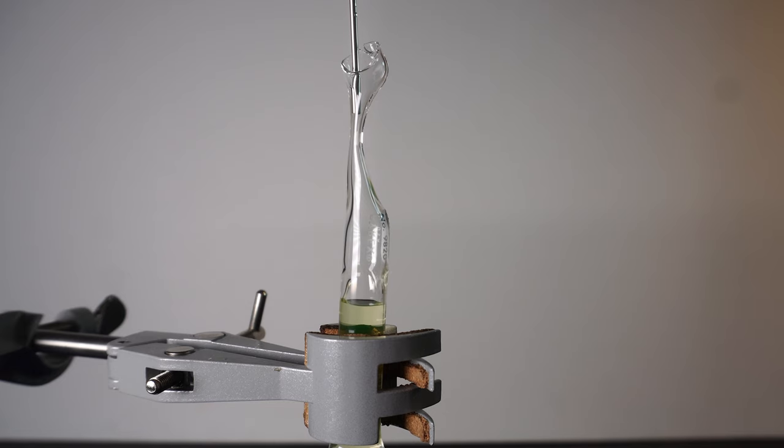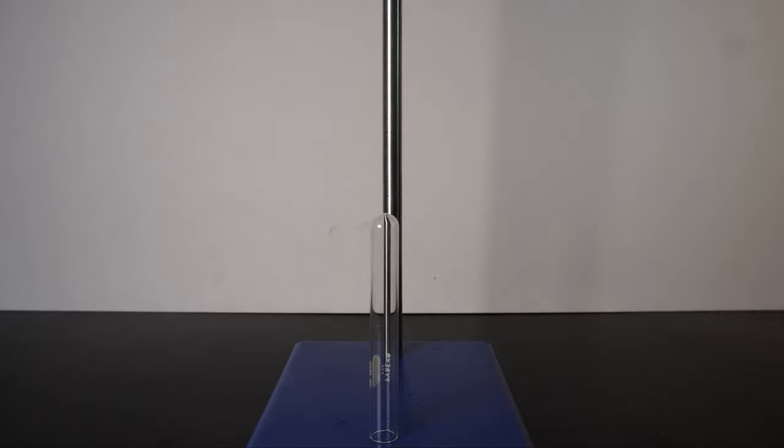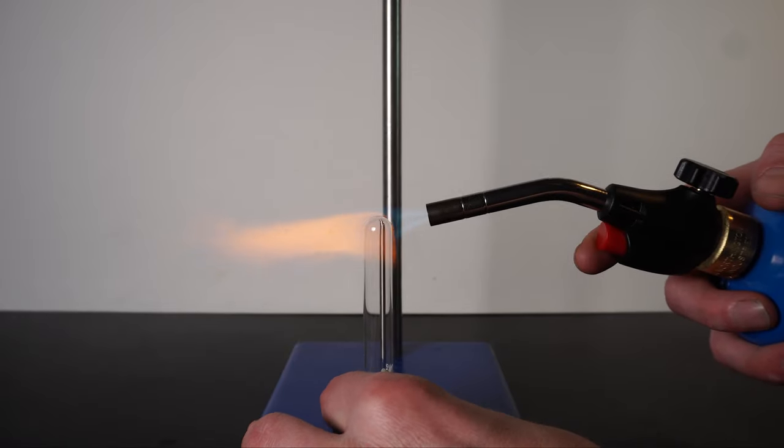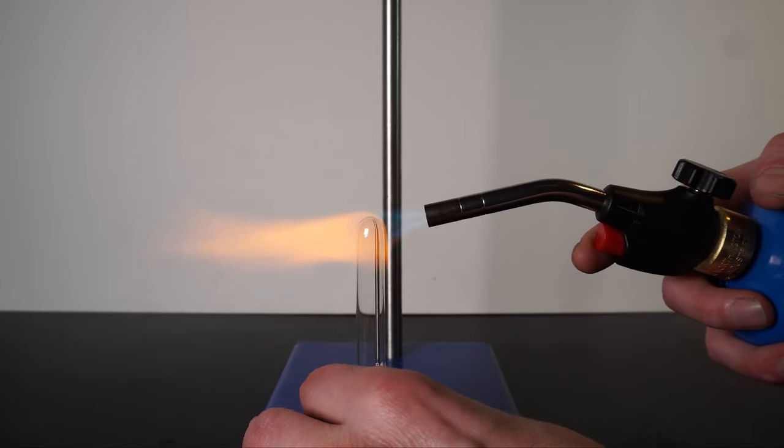Ampules are small sealed glass vials that contain and preserve samples. You can make them by melting a borosilicate test tube and sealing it by melting and pulling. So in today's video that's what we'll be doing, plus I'll give some good things to look out for.